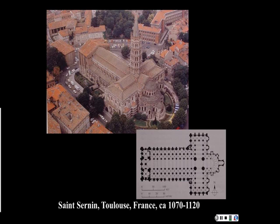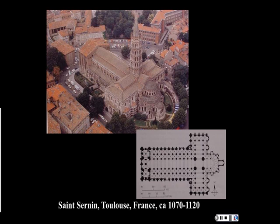Here is a testament from a monk witnessing this fervor of church building. His name is Raoul Glaber, and he wrote in his text the Historia, dated to 1003: 'As the third year that followed the year 1000 drew near, there was to be seen over almost all the earth, but especially in Italy and Gaul, a great renewal of church buildings. Each Christian community was driven by a spirit of rivalry to have a more glorious church than the others. It was as if the world had shaken itself and cast off its old garments and dressed itself again in every part in the white robe of churches.' This is a metaphor widely used to describe this church-building campaign around 1000.